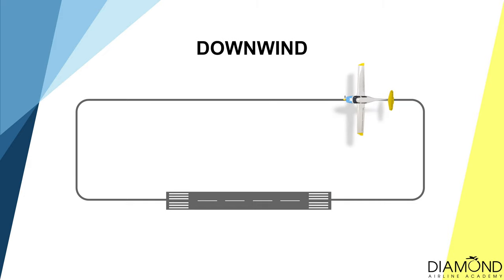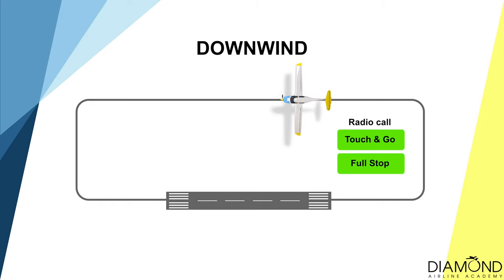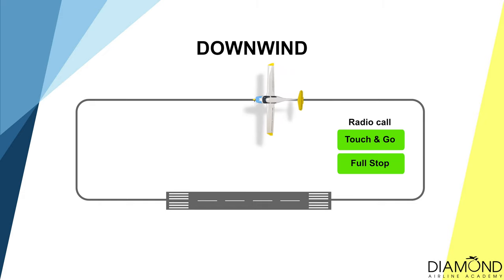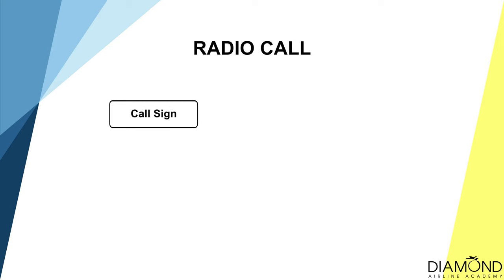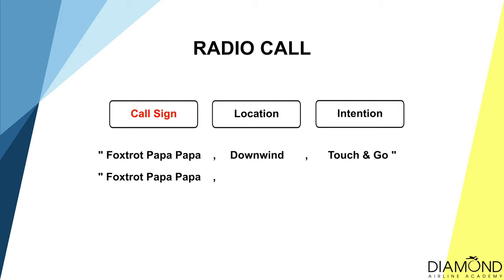During the turn onto downwind, make a radio call to the tower letting them know your intention — whether you're going to do a touch and go or a full stop. The format is: call sign, location, then intention. For example: 'Foxtrot Papa Papa Papa Papa, downwind, touch and go.' Or: 'Foxtrot Papa Papa Papa, downwind, full stop.'